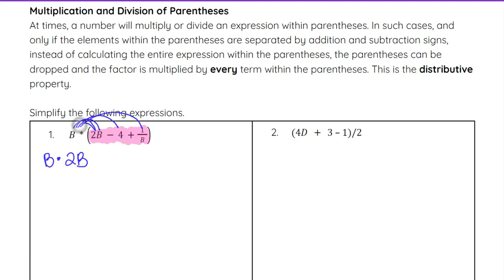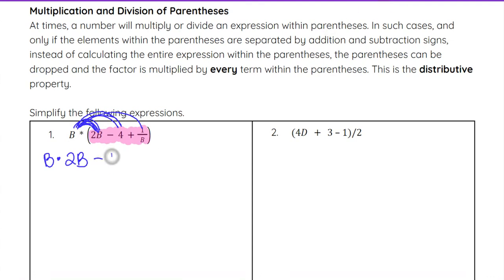So b times 2b is the first multiplication. Then we do b times negative 4 — you can write it as plus b times negative 4, or as minus b times 4; both ways work out the same. And the last multiplication is b times 1 over b, so plus b times 1 over b.